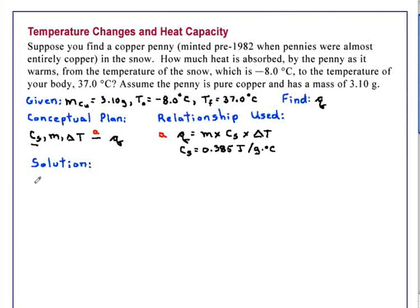So now we are ready to solve the problem. We need the delta T. Temperature change is T final minus T initial. Temperature winds up at 37.0 degrees C, and from that we will subtract the initial temperature of minus 8.0 degrees C. And that is a total energy change of 45.0 degrees C.